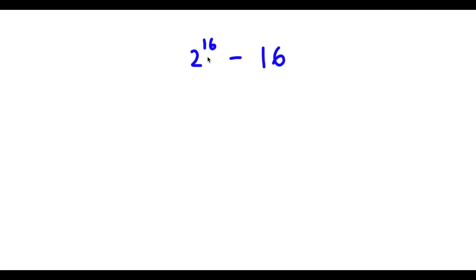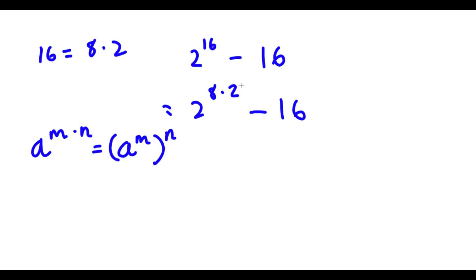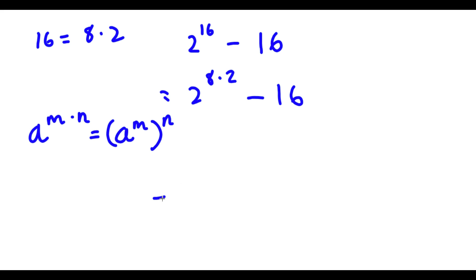Now I have 2 to the power of 16 minus 16. Now 16 here is the same thing as 8 times 2. So I can rewrite this as 2 to the power of 8 times 2, minus 16. And if I have something in the form a to the power of m times n, this is equal to a to the power of m to the power of n. So 2 to the power of 8 times 2 becomes 2 to the power of 8 to the power of 2.